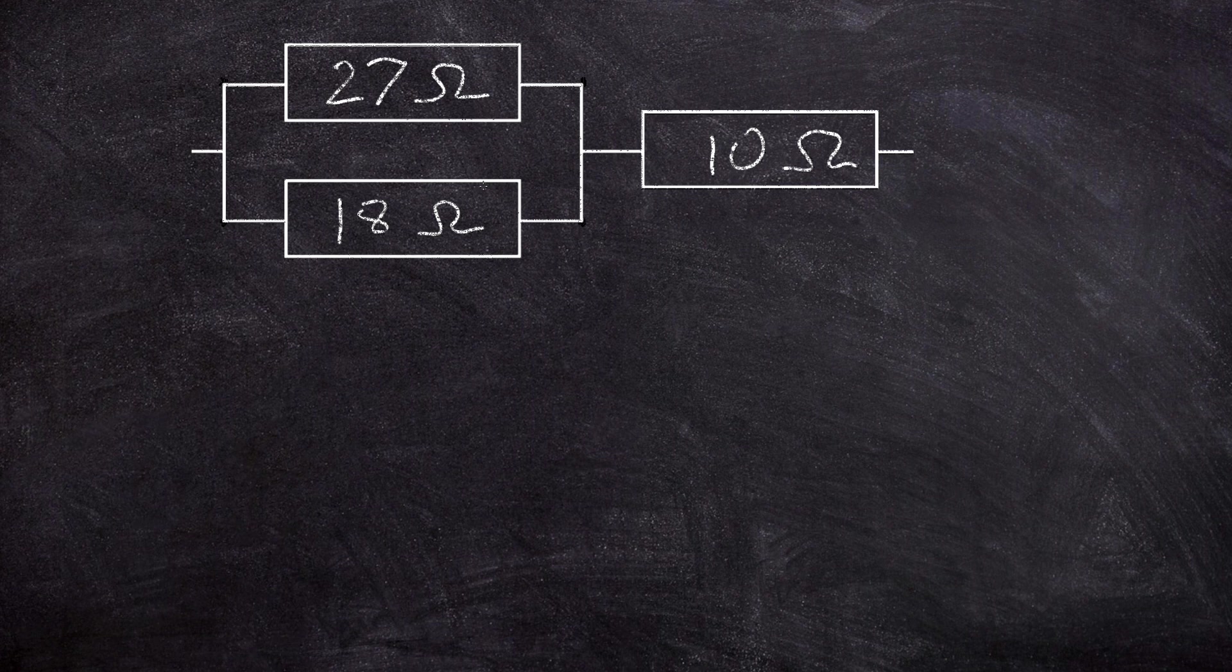So the easiest way to do that is to use the product over sum method because we've got two resistors in parallel of different values. It's also worth remembering of course that where we've got resistors connected in parallel, such as you have in this little bit of the circuit, we can see there that the total resistance of the parallel resistors will always be smaller than the smallest resistor.